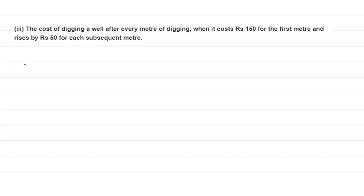Hello to everyone, welcome back to our channel. Today's question is: which situation is an AP series? The statement is: the cost of digging a well after every meter of digging, when it costs rupees 150 for the first meter and rises by rupees 50 for each subsequent meter.